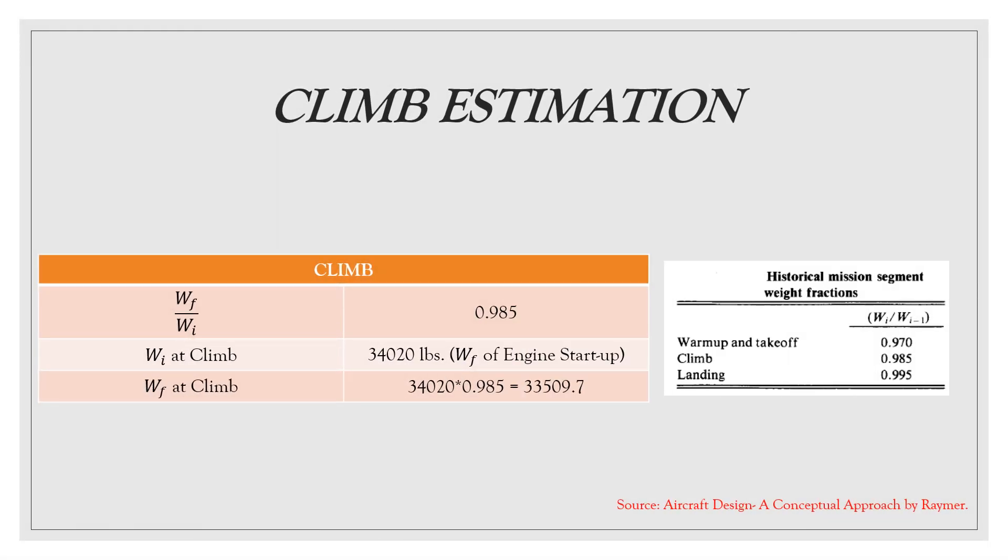Climb estimation. After take-off, the aircraft will generally climb to cruise altitude and accelerate at cruise speed. The estimation of the weight fraction for this phase of the flight can be found from empirical data. WF by WI weight fraction is equal to 0.985 at climb. Considering WI at climb is equal to WF of engine startup that gives us 34,020 pounds and ultimately we get our WF at climb as 33,509.7 pounds.